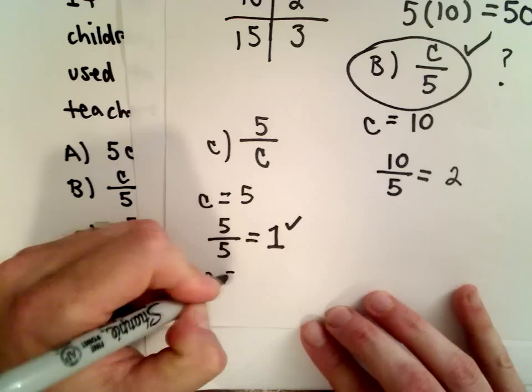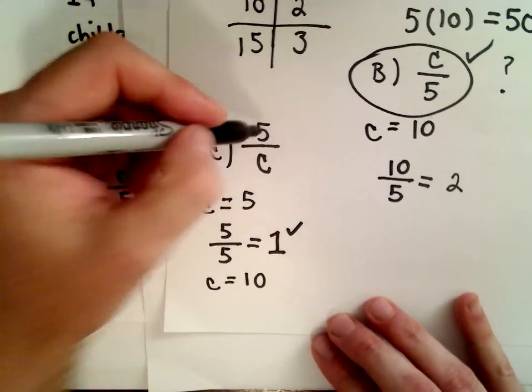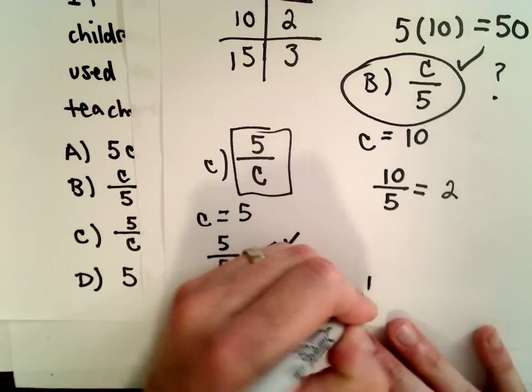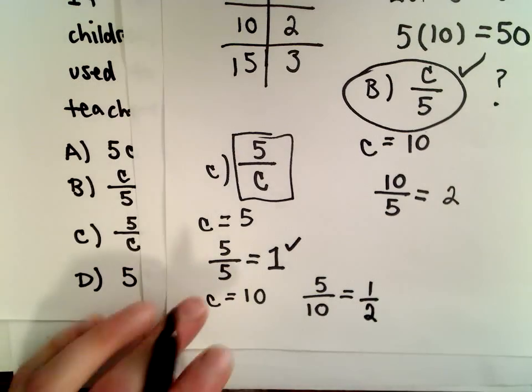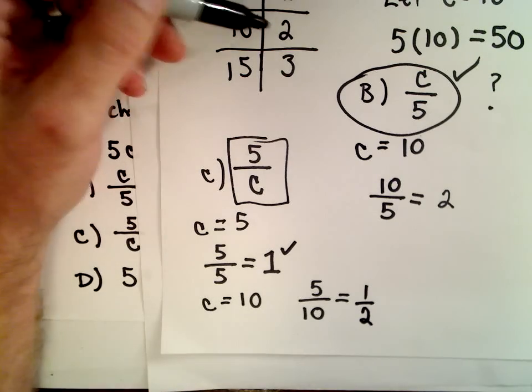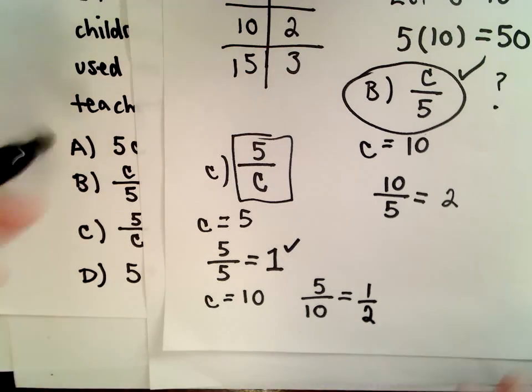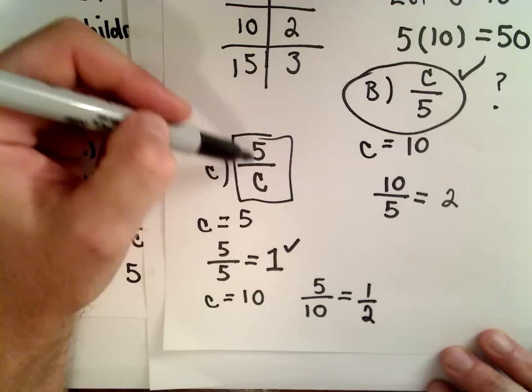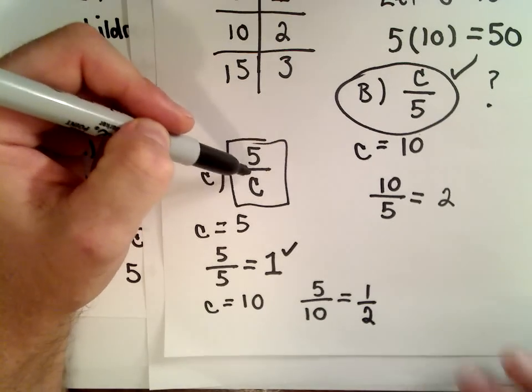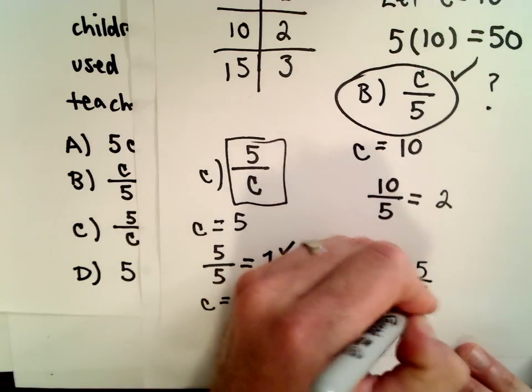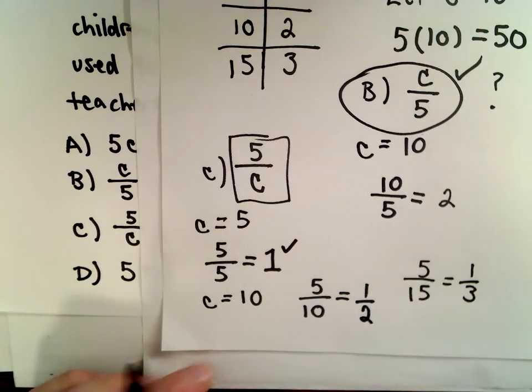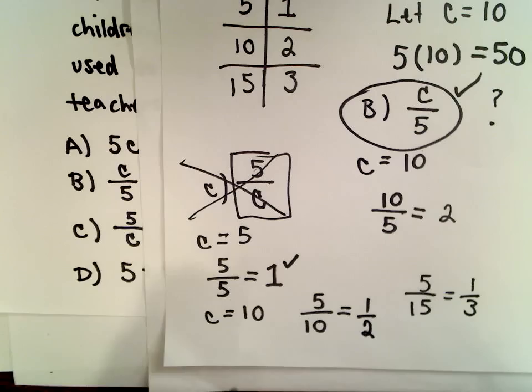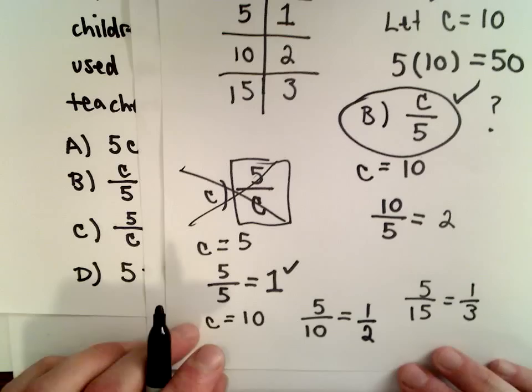Let's check another value. Let C equal ten. If C equals ten and we put it into our formula, we get five divided by ten, which is one-half. Now it says you need half a teacher, which clearly doesn't make sense. We need two teachers. If we plug in C equals fifteen, we get five over fifteen, which reduces to one-third. Clearly not the correct value. C doesn't make sense. Let's be careful there.